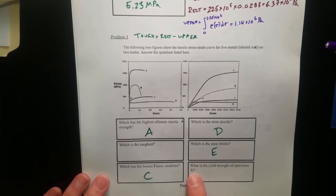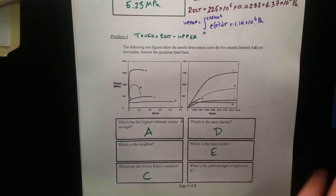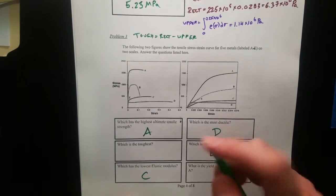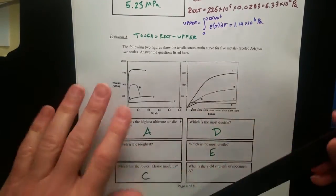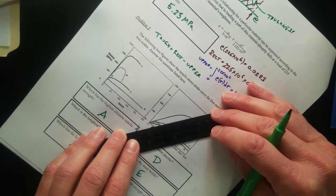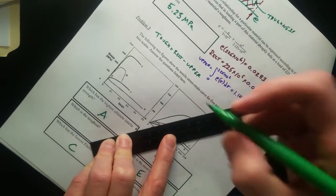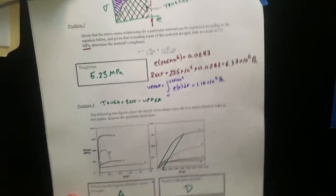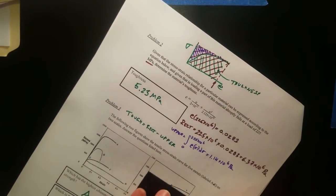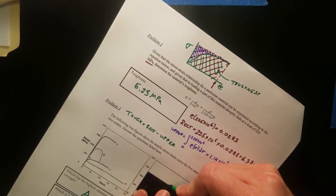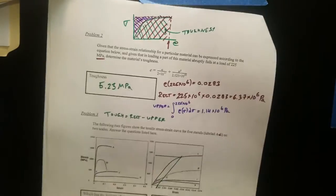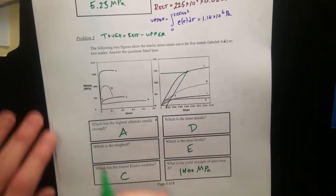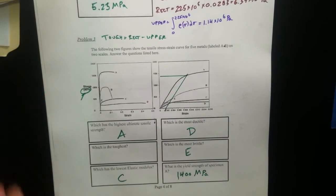Which one has the lowest elastic modulus? The elastic modulus is the slope. The one with the lowest elastic modulus is C. And what is the yield strength of the specimen A? You take the yield strength at the 0.002 strain. We draw a line parallel to the elastic range and draw a horizontal over. That is around 325 megapascal.